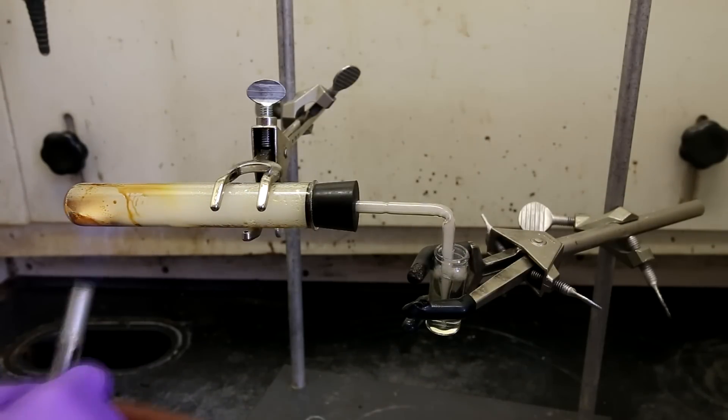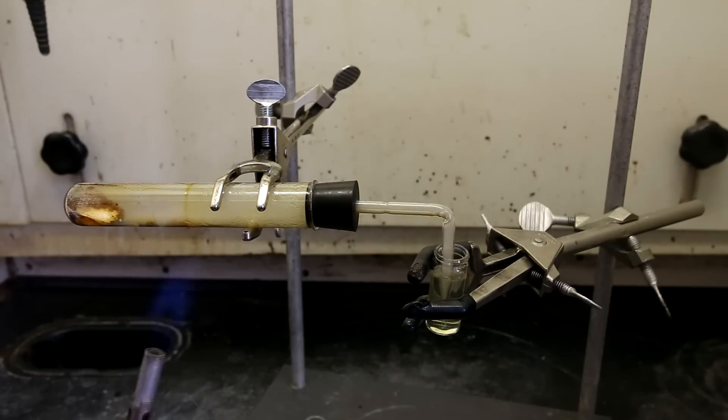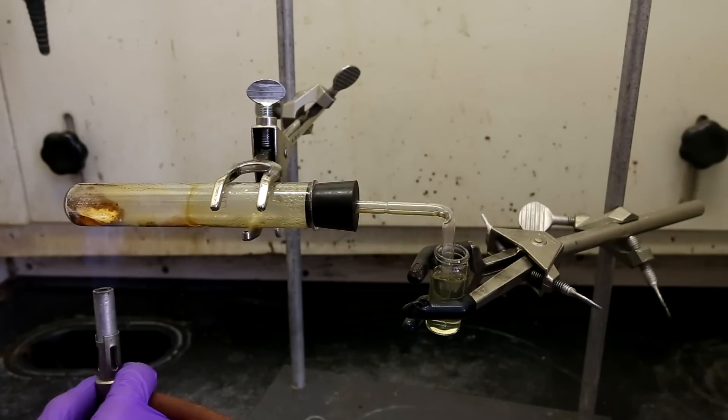As I heat up the test tube, you will see a lot of brown-yellow liquid condensing on the walls. This is the cadaverine that is vaporizing and then recondensing.